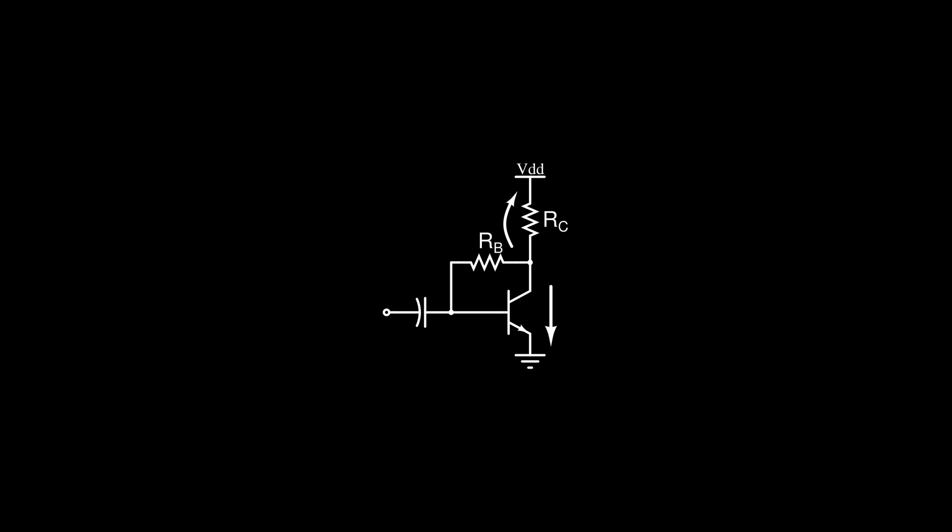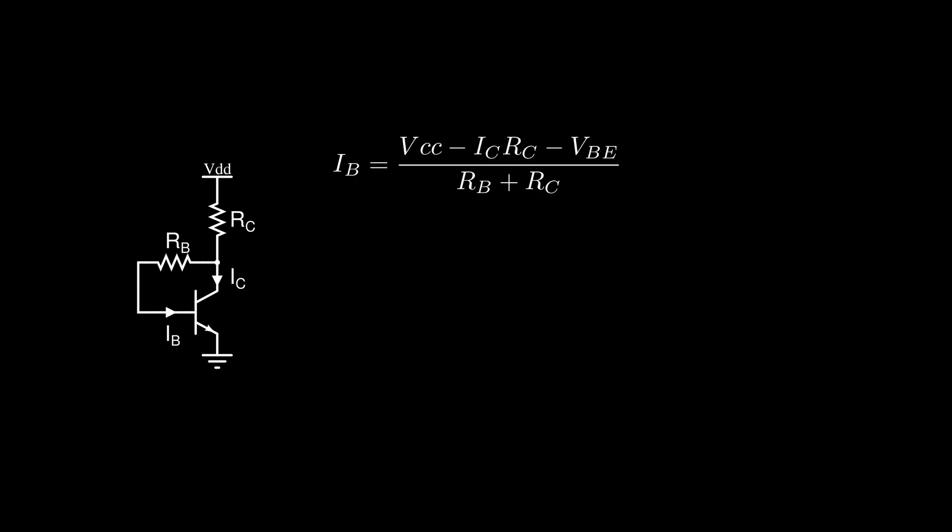Let's confirm our theory with math. With some basic calculations, we can express IB as visible. We can then do the derivative with respect to IC, which will give us minus RC over RC plus RB. If we plug this result in the stability factor expression, we can find this, which is less than the beta plus one we found before.